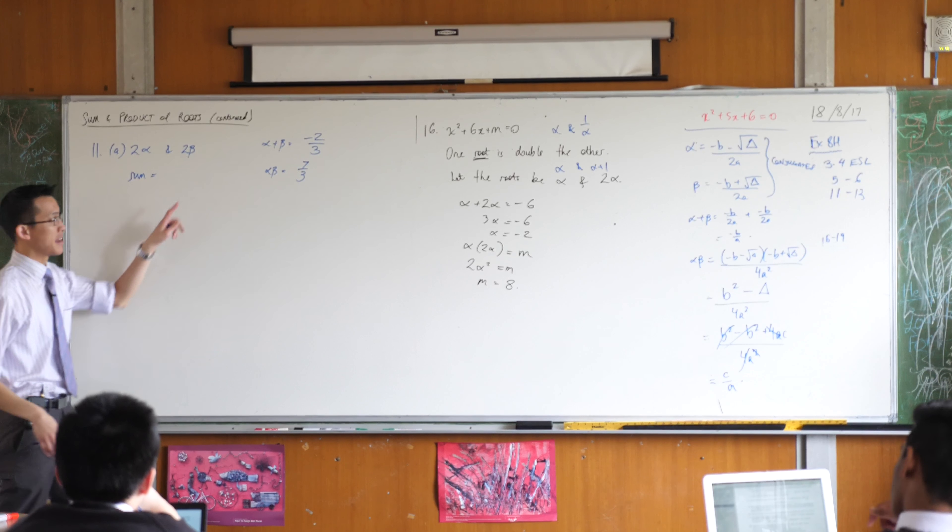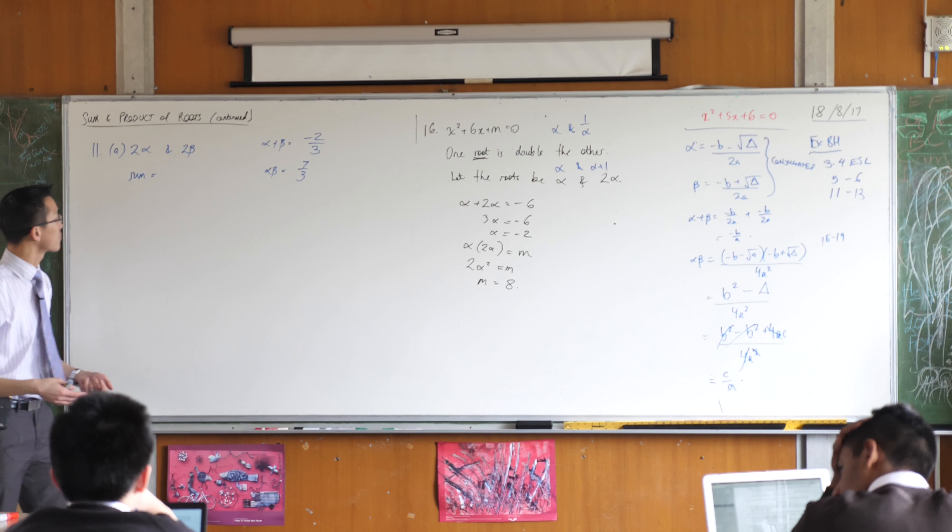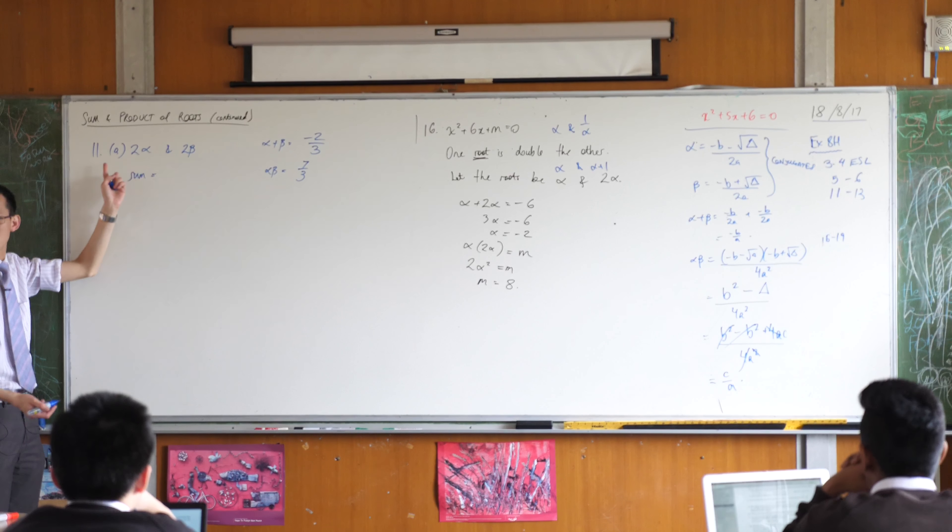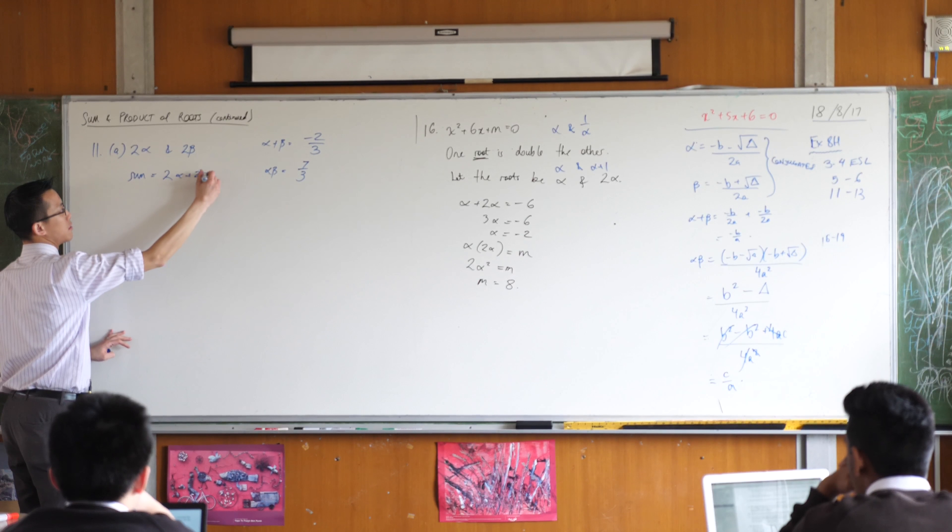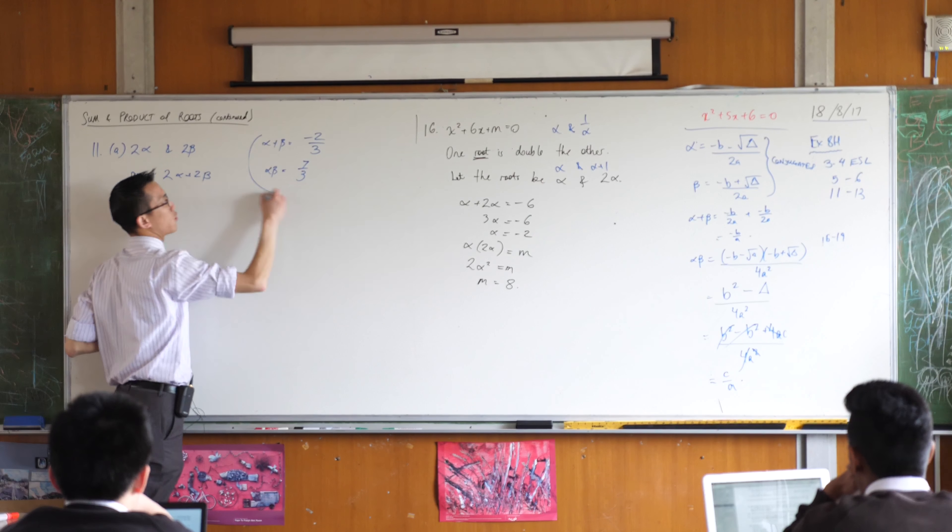So I can't write this as minus b over a because I don't know what b and a are equal to. But I don't need to because the sum and product of roots just come from these guys. If that's one of the roots and this is the other one, the sum of the roots will be 2 alpha plus 2 beta. Do you agree? That's the sum of the roots. Literally, I just added them up.